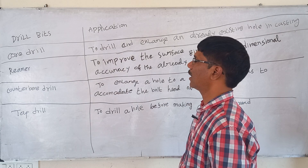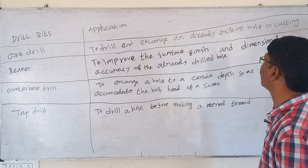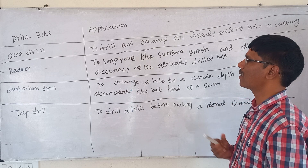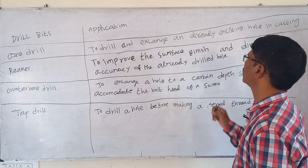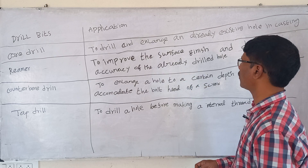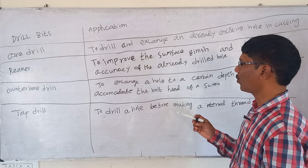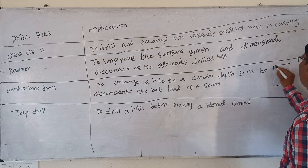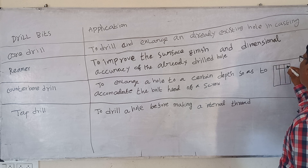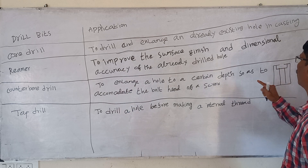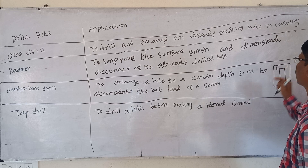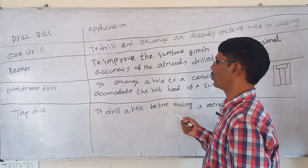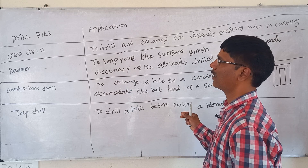A core drill is used to enlarge already existing holes in castings, where holes are produced with the help of a core. A reamer is used to improve the surface finish and dimensional accuracy of an already drilled hole. A counter bore drill is used to enlarge a hole to a certain depth to accommodate the head of a bolt or screw. A tap drill is used to drill a hole before making an internal thread, and the hole should be drilled before tapping.